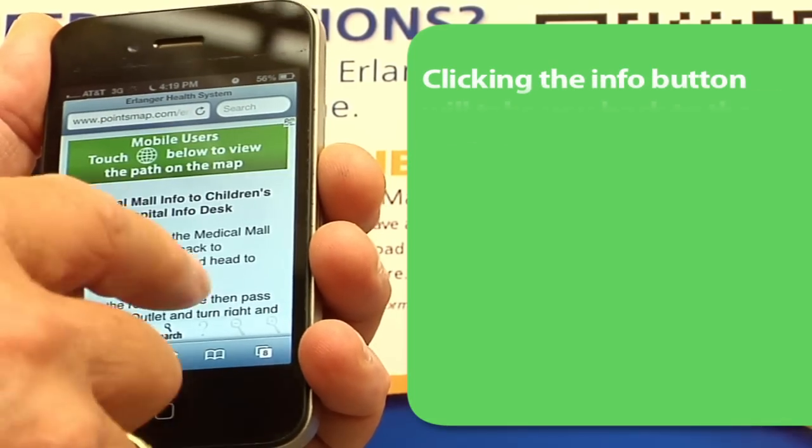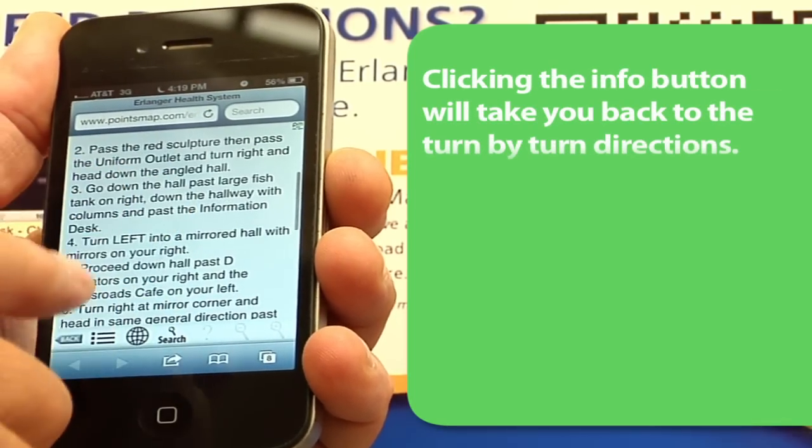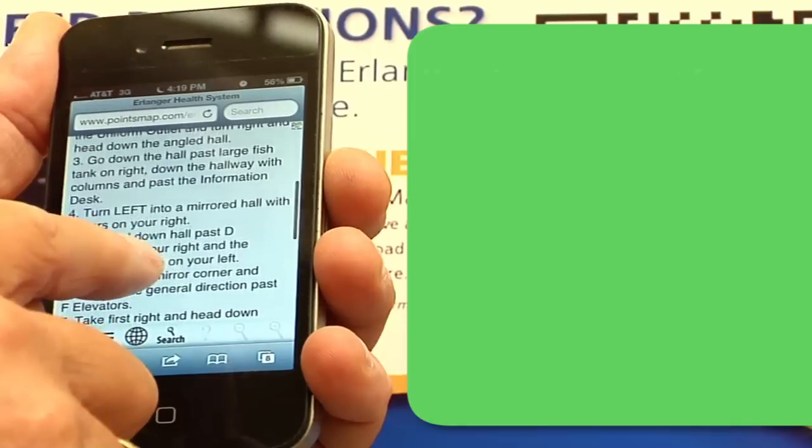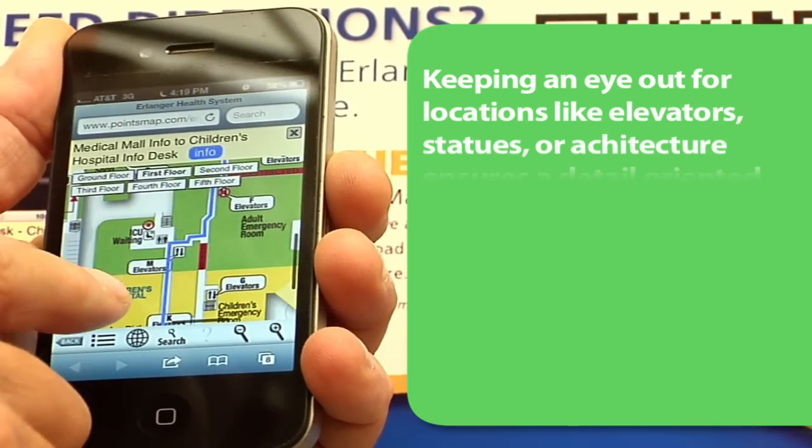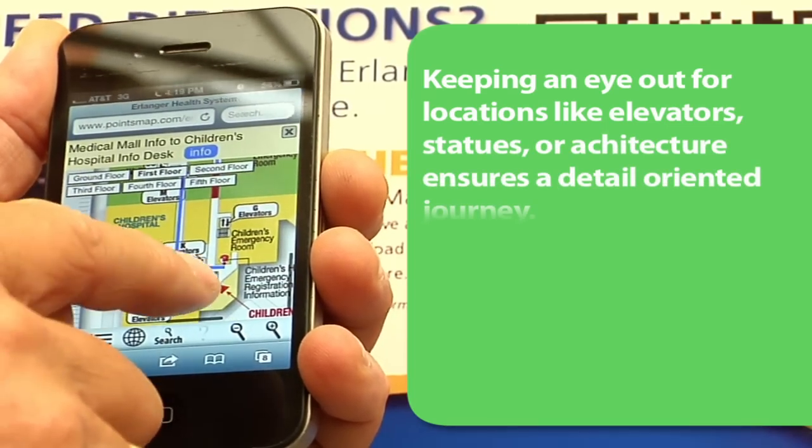Clicking the Info button will take you back to the turn-by-turn directions. Keeping an eye out for mentioned locations like elevators and eye-catching statues or architecture ensures a detail-oriented journey between your locations.